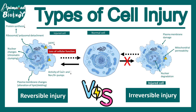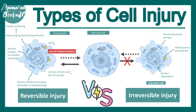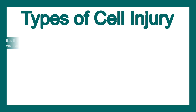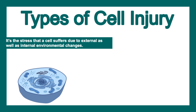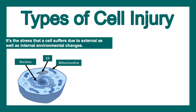This video will discuss the types of cell injury, focusing on and comparing reversible versus irreversible injury. Due to environmental changes or toxic chemical exposure, there could be injury to the cell. When we talk about types of injury, we have to consider that there are specific organelles which are highly susceptible, like mitochondria, endoplasmic reticulum, nucleus, and membrane.